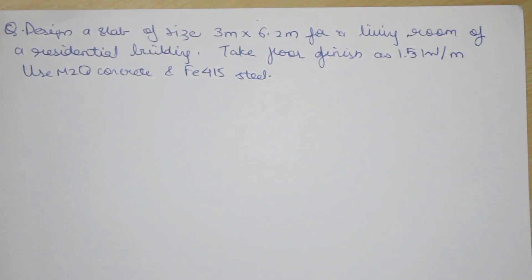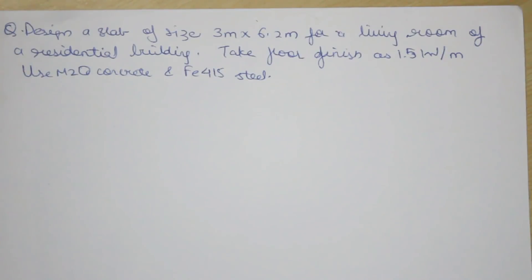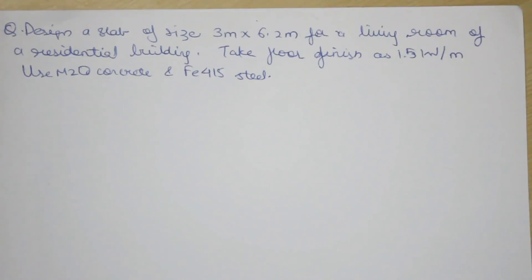Welcome back. Today's video is on the design of a one-way slab. We will see the design steps, and in the next video we will cover the various checks after designing. There are two types of slabs: a one-way slab spans in one direction, while a two-way slab spans in two directions. In a one-way slab, tension reinforcement is provided only over the shorter span, while in a two-way slab it is provided in both directions.